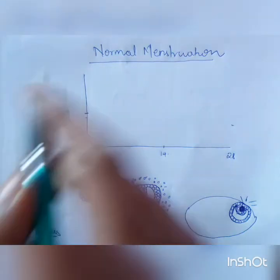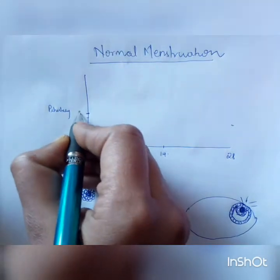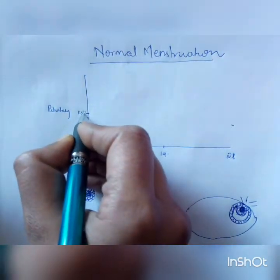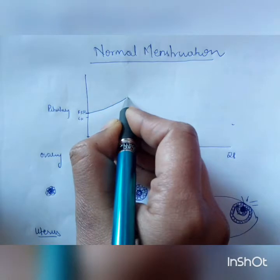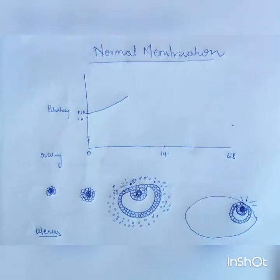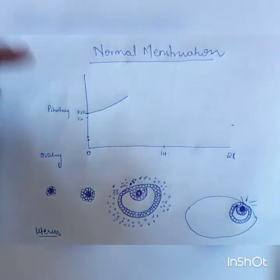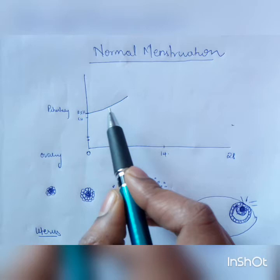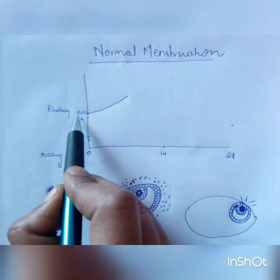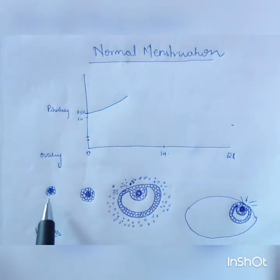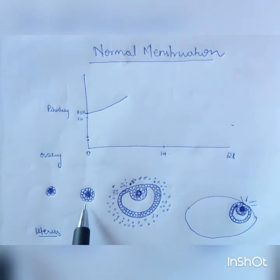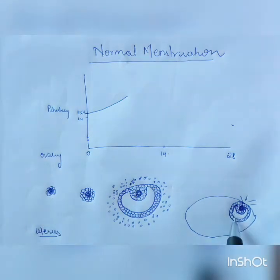The stimulus for each cycle comes from FSH. FSH begins to rise first thing in the cycle. As its name suggests, it is a follicle stimulating hormone, so it stimulates your follicle from the primordial follicle to pre-antral, to antral, and finally to the Graafian follicle. This is brought about by FSH.